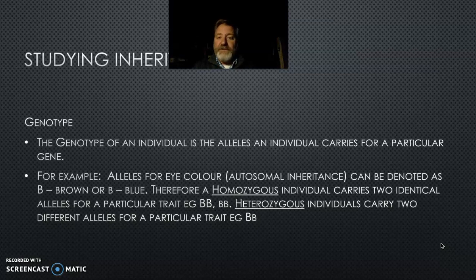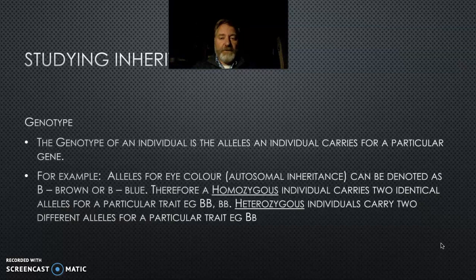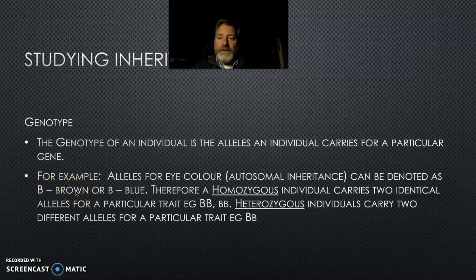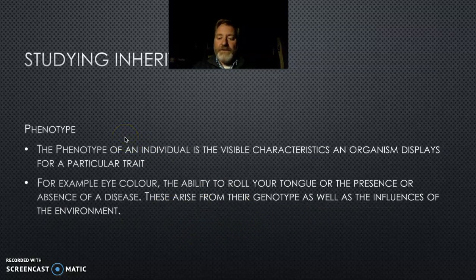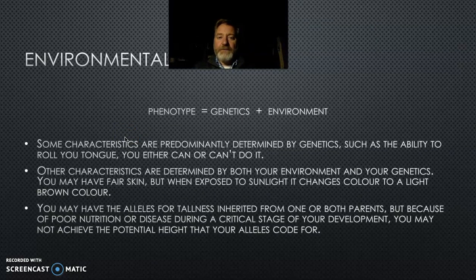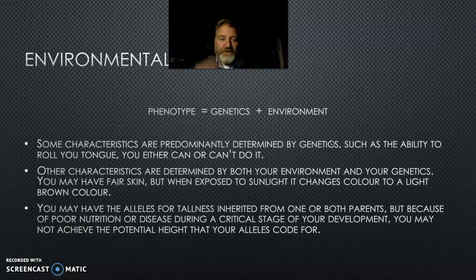When studying inheritance, you're looking at patterns of alleles being inherited. We talk about individuals who are homozygous — where both alleles are the same — and heterozygous, where the two alleles, one from each parent, are different. The genotype is described using notation such as BB, Bb, or bb. The phenotype is what you actually look like, and it is also influenced by the environment — the physical, social, and emotional environment — because even how our brain works is influenced by our genes and our surroundings.